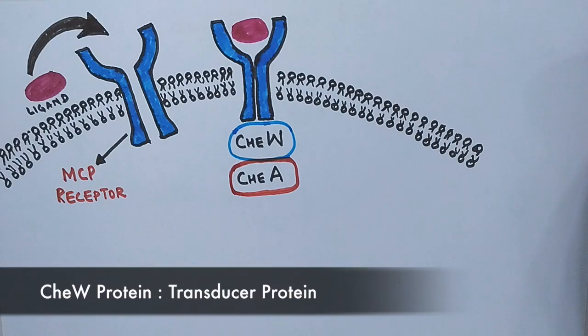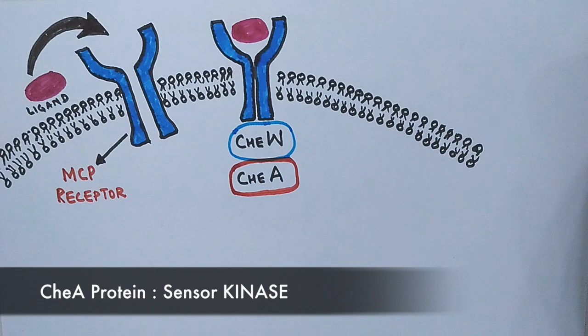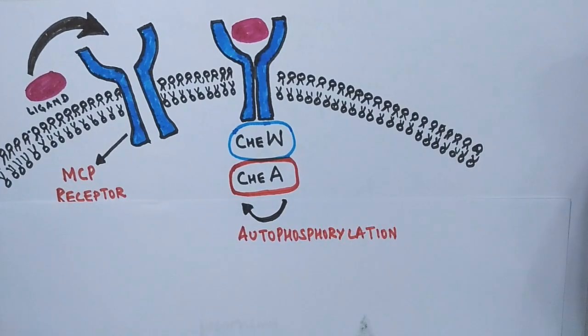The CheW protein only acts as a transducer protein for the signal to be transmitted to CheA protein, and it is this CheA protein which acts as a sensor kinase. The CheA shows kinase activity and autophosphorylates itself on histidine residues.